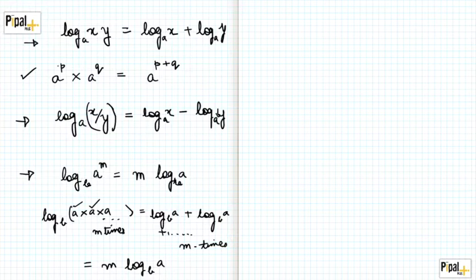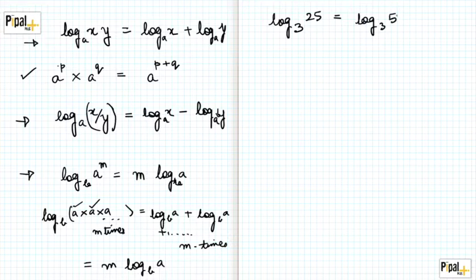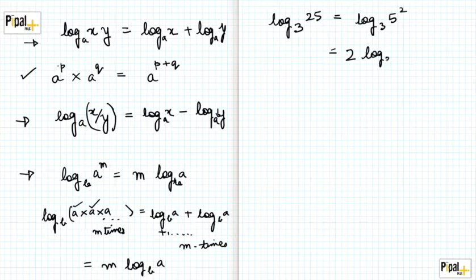Basically, the power of a number can be brought outside the log. For example, if you have log base 3 of 25, we can write this as log base 3 of 5 squared, and bring out the power 2 outside. So this equals 2 times log base 3 of 5.